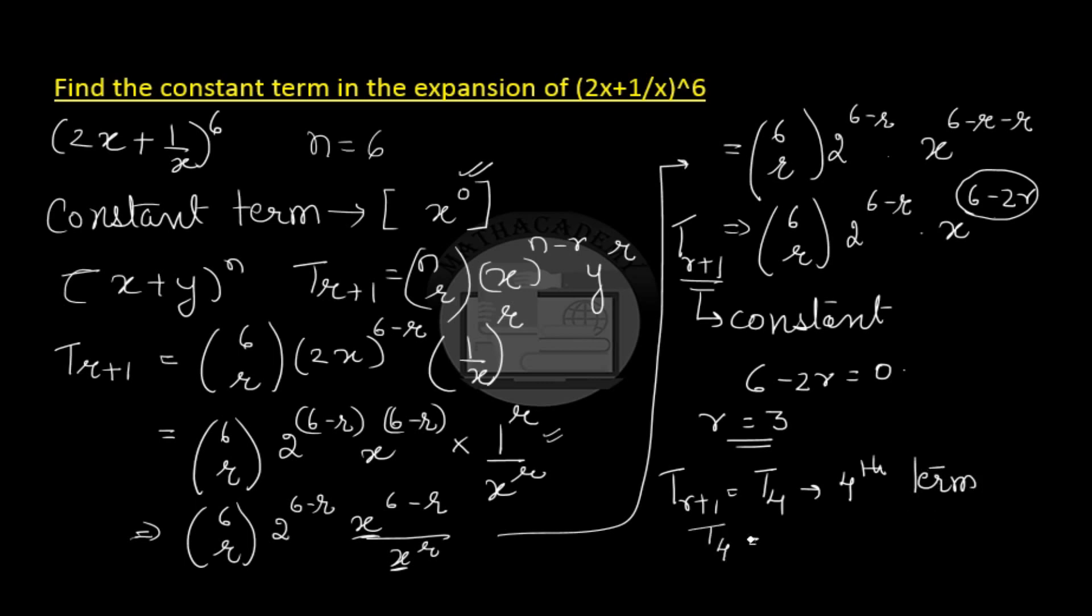And then the 4th term will be given as 6 choose 3, r is 3, 2 to the power of 6 minus 3, and definitely x to the power of 0, because that is how we got r as 3.